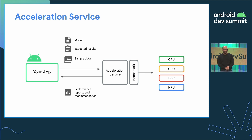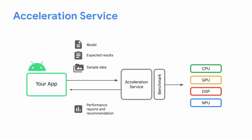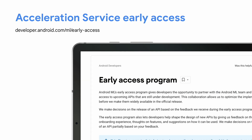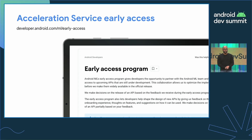Hardware acceleration is the key to increasing execution performance, but finding the optimal processing unit for your model can be difficult. That's why we are currently building an Acceleration Service for Android. You will be able to pass your model, some sample inputs, and expected results, and the service will run a benchmark to evaluate the optimal hardware on device and tell you whether to use CPU, DSP, or NPU. This is currently in early access, accepting applications, and we aim to ship it publicly early next year. Visit the ML Android Developer Documentation to learn more.